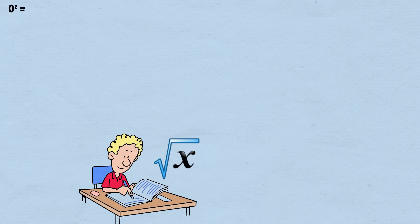Zero squared equals zero. One squared equals one. Two squared equals four. Three squared equals nine. Four squared equals 16. Five squared equals 25. Six squared equals 36. Seven squared equals 49. Eight squared equals 64. Nine squared equals 81.